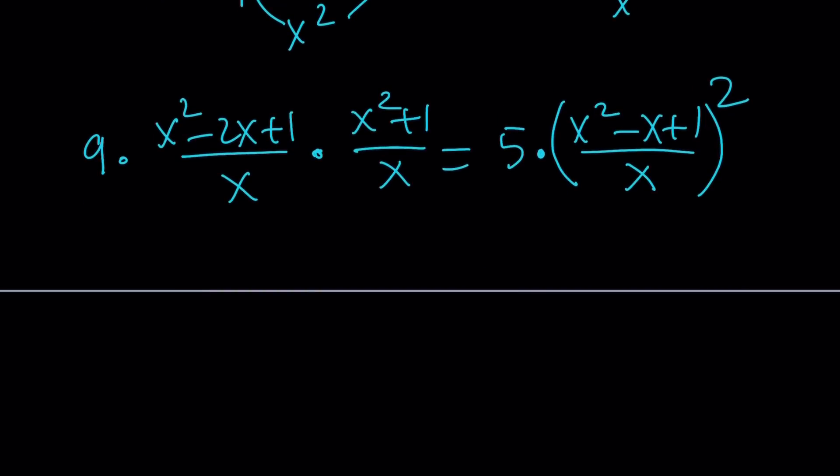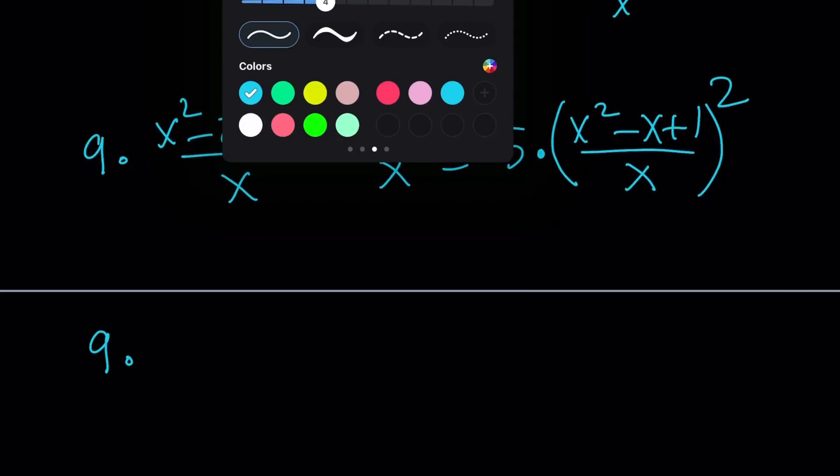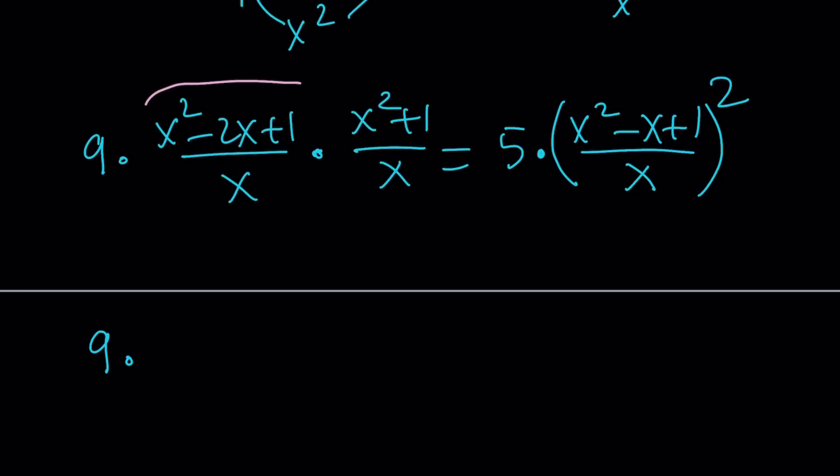Now notice what we're going to end up getting. This is going to give us 9 times, now I'm going to split this up, because when you have a polynomial divided by a monomial, you can actually write it as a sum of something, right? You can split up the terms. x squared divided by x is x, so I'm going to write it like x minus 2 plus 1 over x. This is where the magic begins. Multiplied by x plus 1 over x.